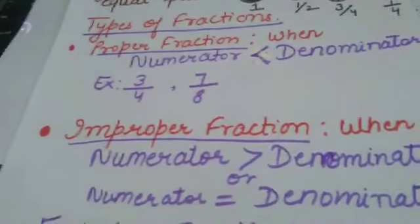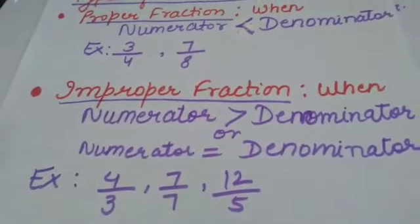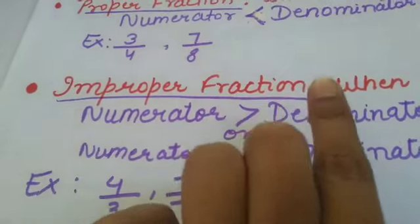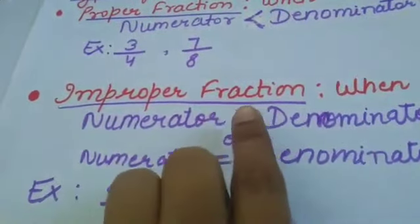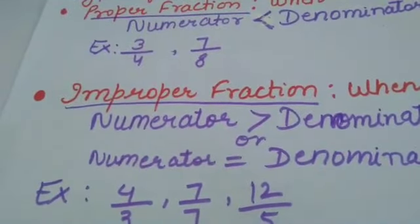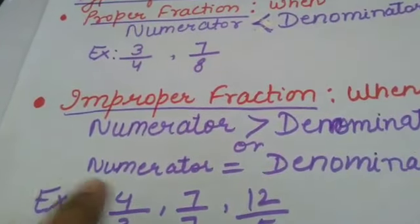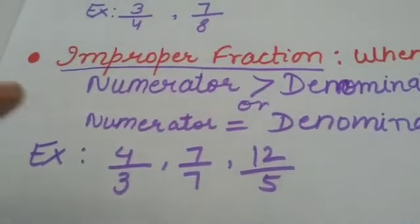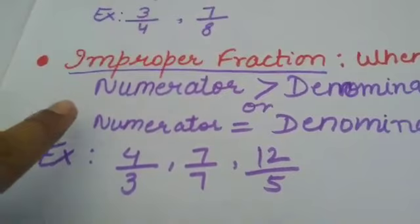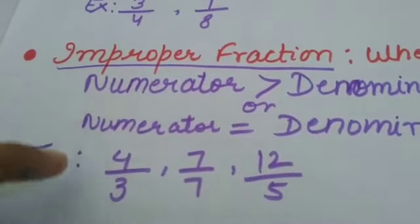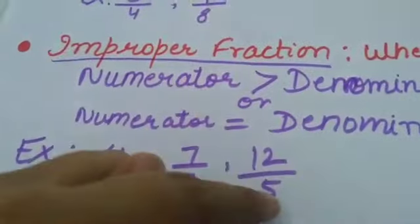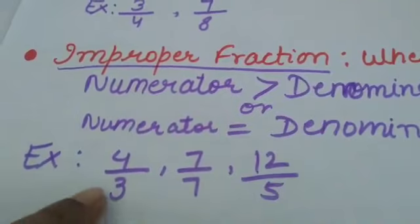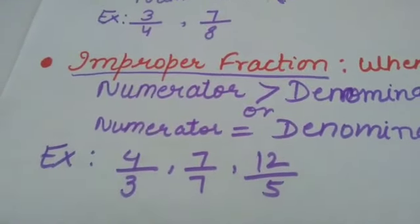Now come to improper fractions. An improper fraction is one where the numerator is greater than the denominator, or the numerator is equal to the denominator. Note that an improper fraction is always greater than or equal to 1. Examples of improper fractions are 4 by 3, 7 by 7, and 12 by 5. Here we can observe that the numerator is greater than or equal to the denominator, so these are improper fractions.